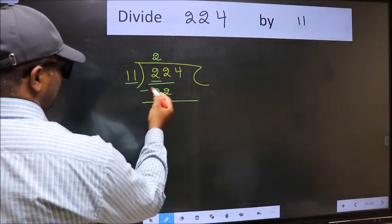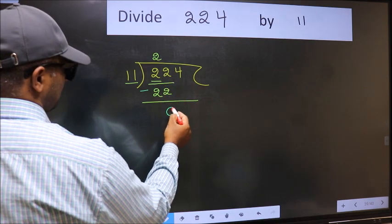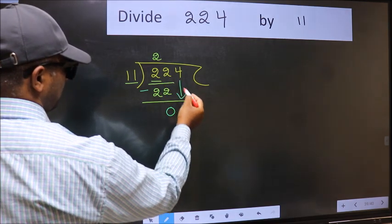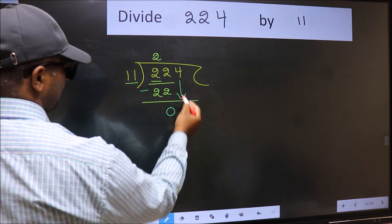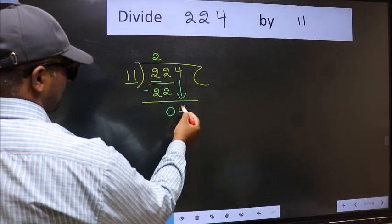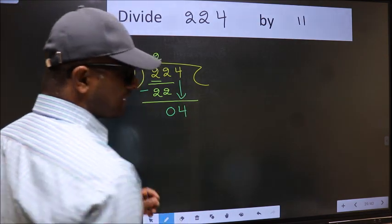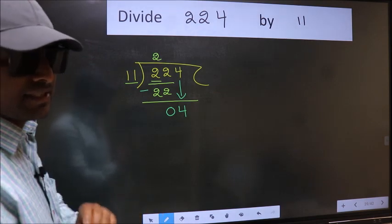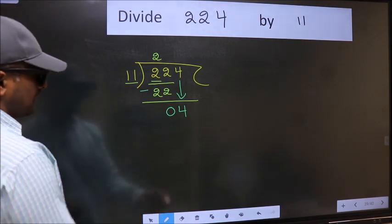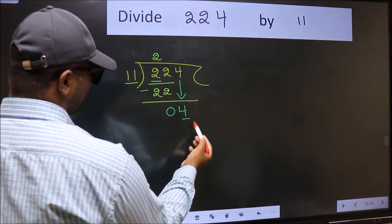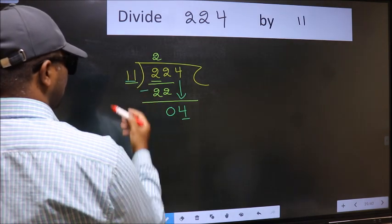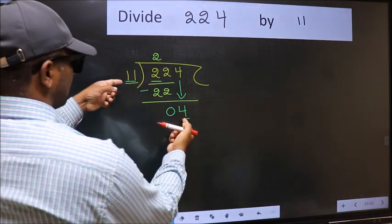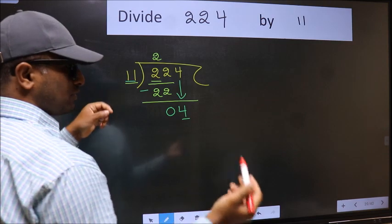Now subtract: 22 minus 22 equals 0. After this, bring down the beside number, so bring 4 down. After this step is where the mistake happens. Here we have 4, and here 11. Since 4 is smaller than 11, what many do is...